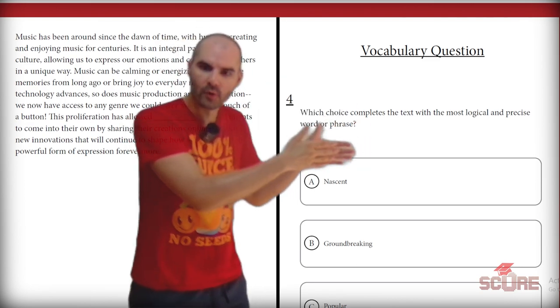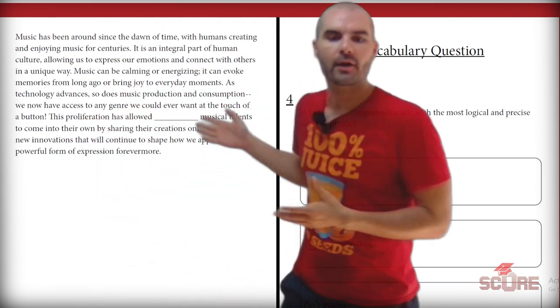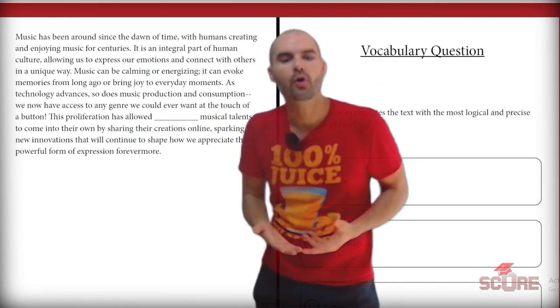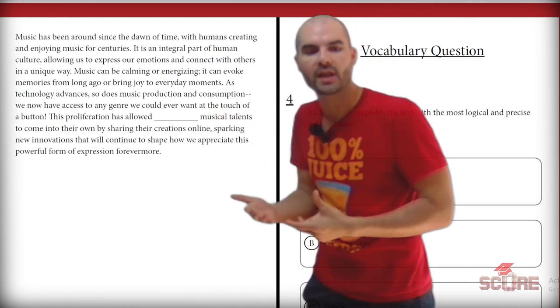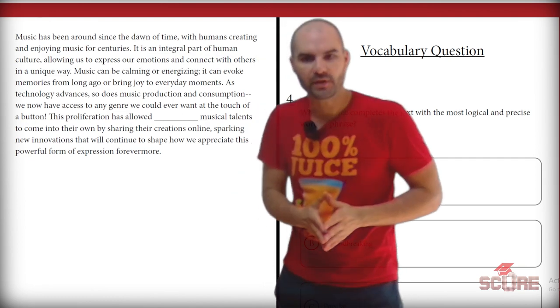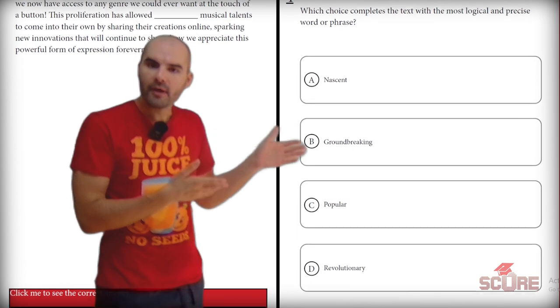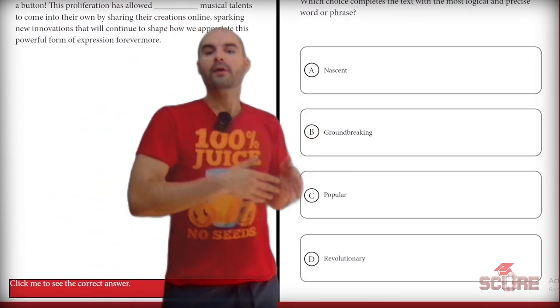Again, same question, vocabulary. I'm going to take a look at my paragraph. And it says this proliferation has allowed blank musical talents to come into their own by sharing their creations online. Again, that's all I need to read right there. I'm going to take a look at my answer choices. Nascent, groundbreaking, popular, revolutionary.